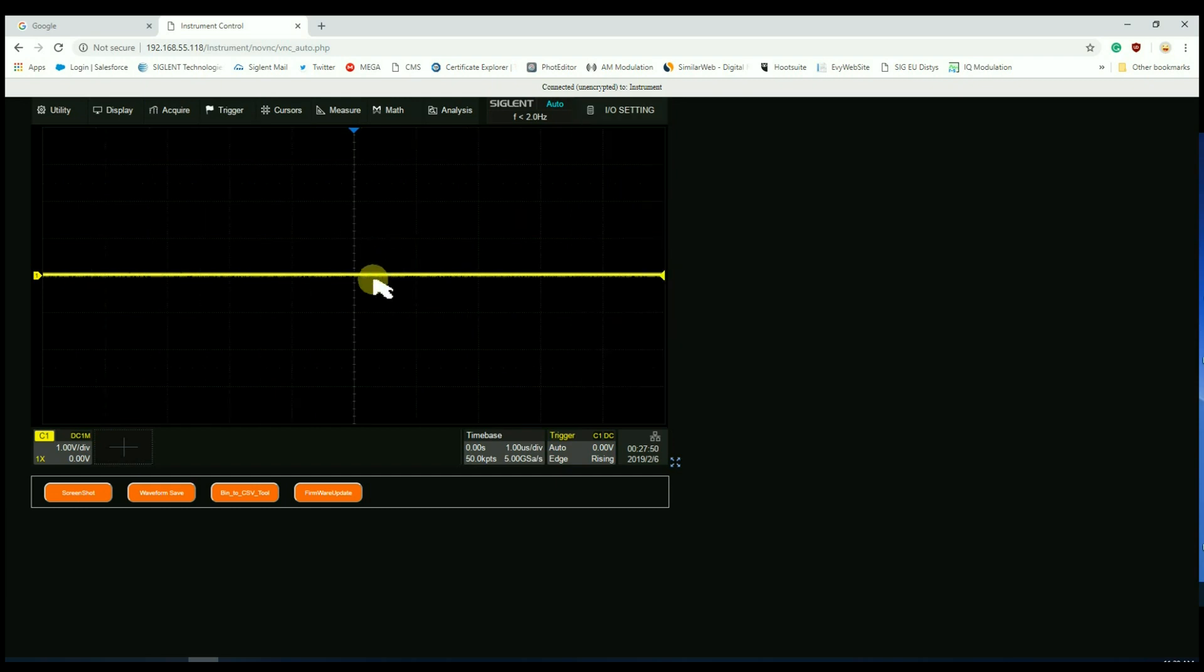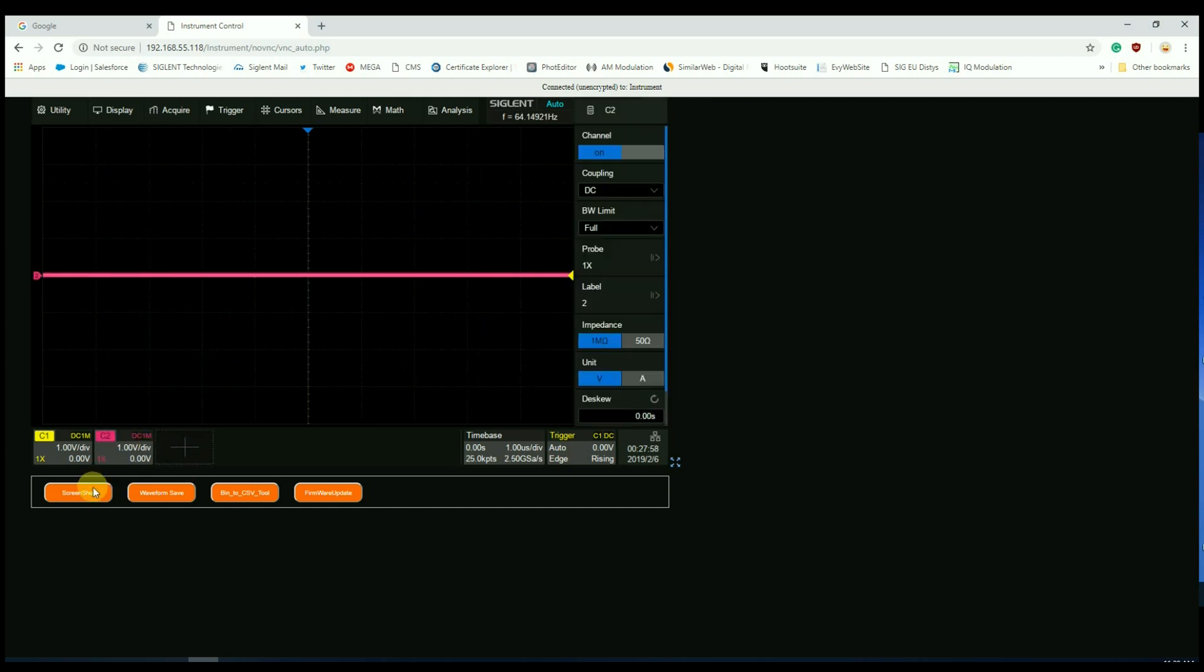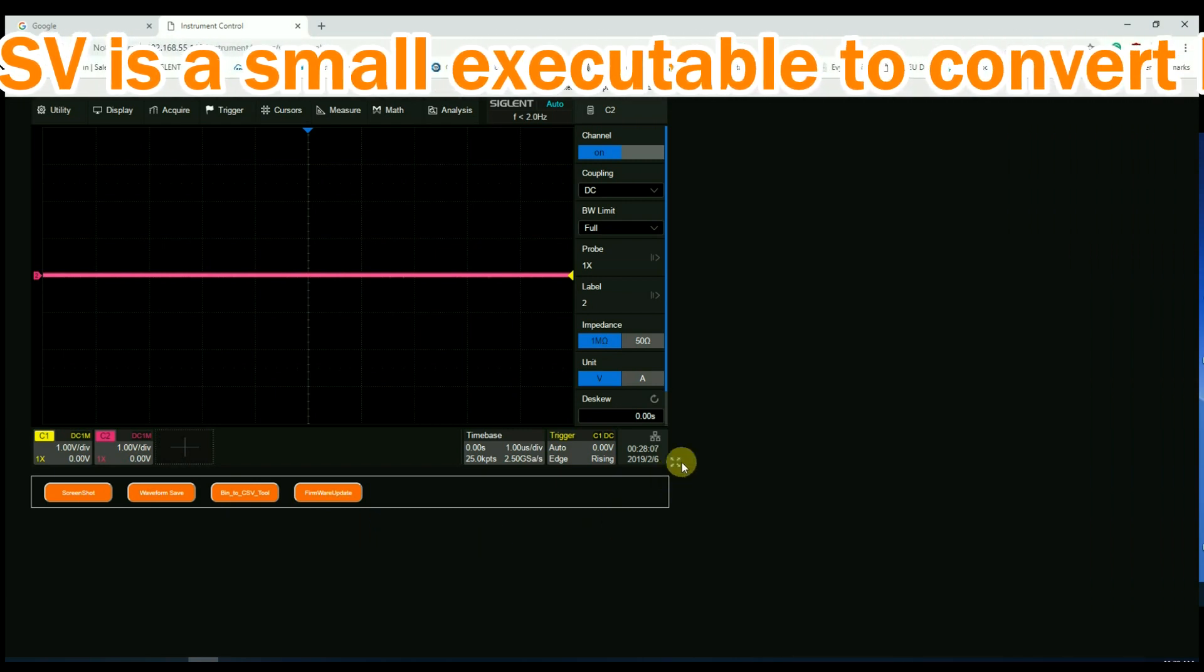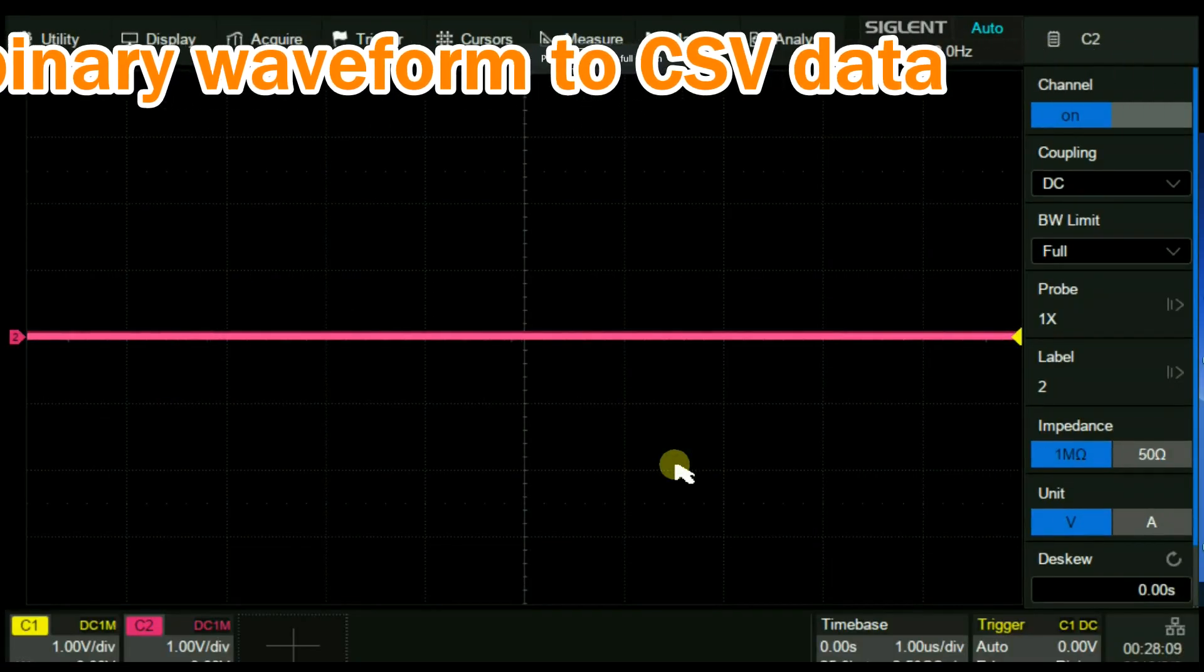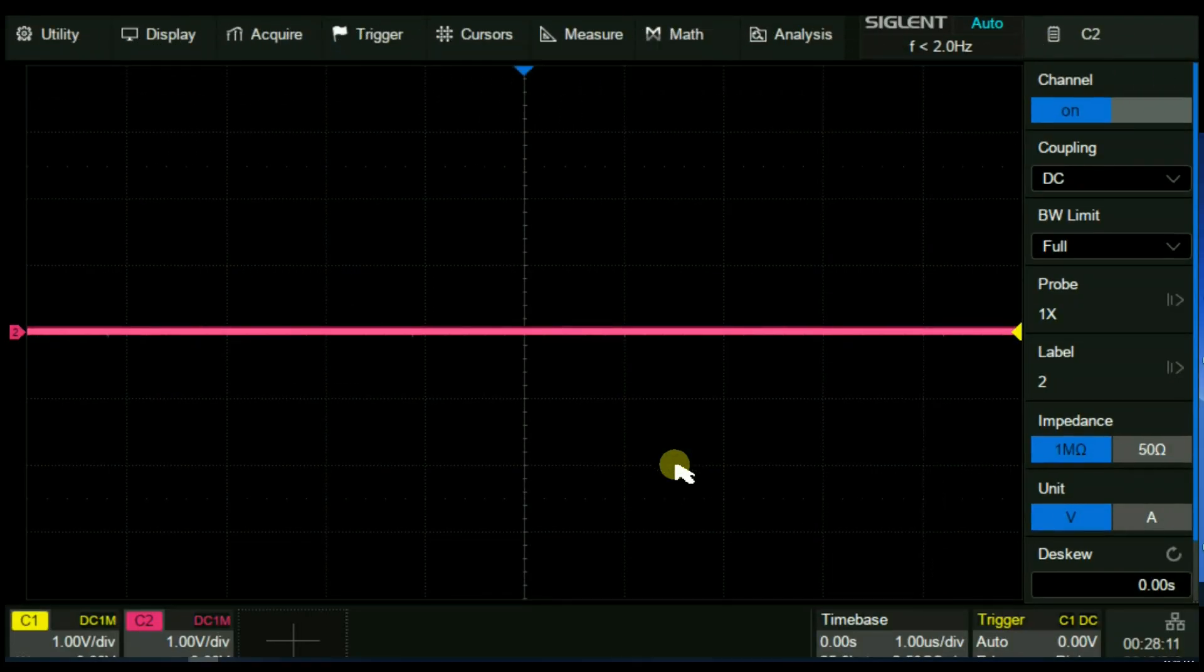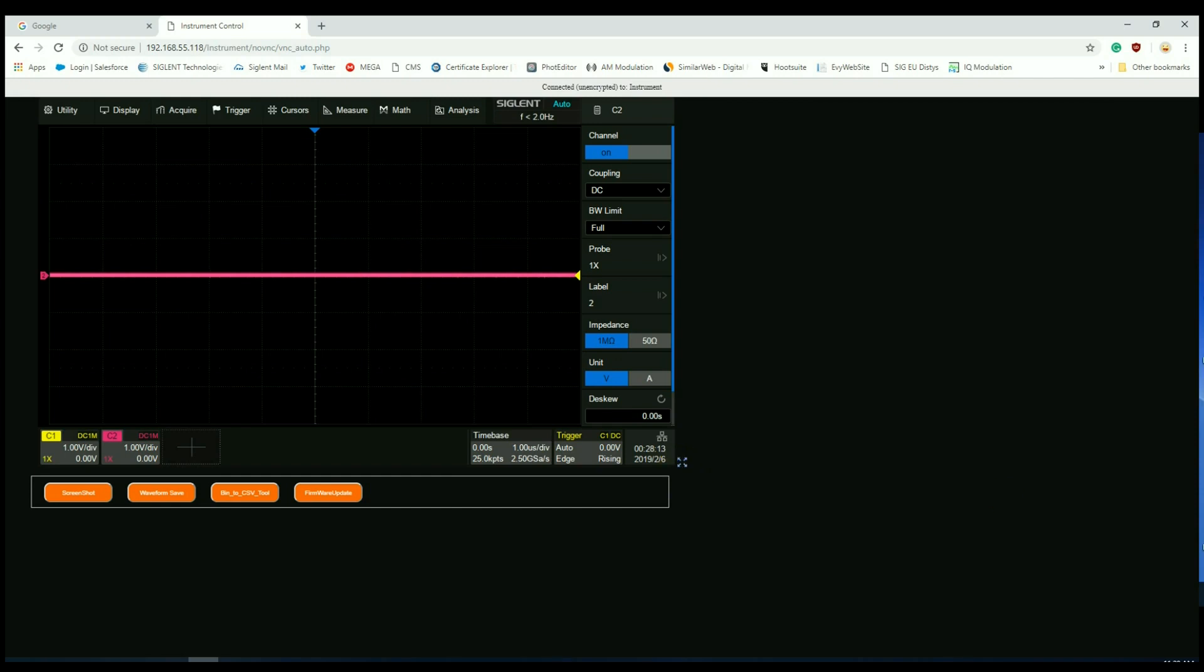Here we can get rid of the menu. We can move traces. We can add channels. Here we're going to just add channel 2. Now we can also capture screenshots, waveform data, and then we can convert the waveform data, which is binary, to a CSV using an internal tool. We can also perform firmware updates and expand that view to fill up the full screen. So in this way we can very quickly use the oscilloscope as a projector and project the image available.